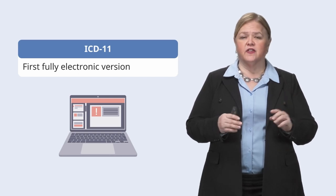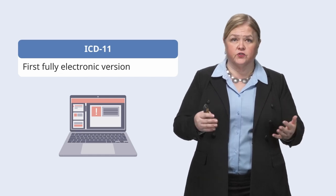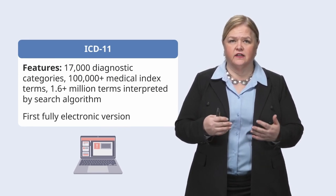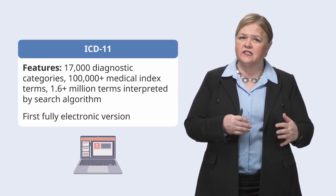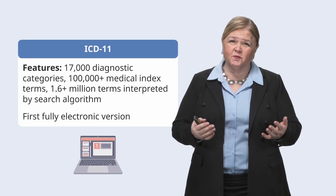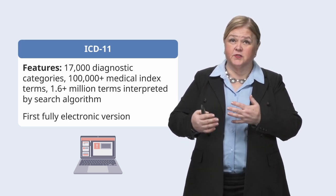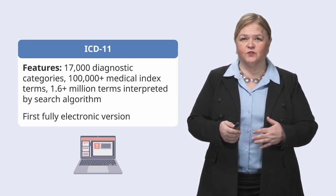Let's talk a little bit about ICD-11, because you're probably wondering what's the difference between ICD-11 and ICD-10. The biggest thing is that ICD-11 is the first version that is fully electronic, which gives you some pretty cool ways to search using its electronic search feature. This version has access to 17,000 diagnostic categories, over 100,000 medical diagnostic index terms, and this index-based search algorithm interprets more than 1.6 million terms. When ICD-11 rolls out and the U.S. adopts it over a number of years, you're going to have some powerful search capability, which should save you significant time when seeking out the correct codes.